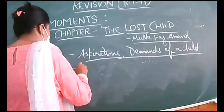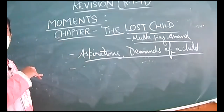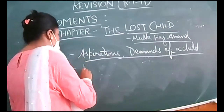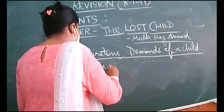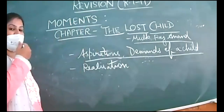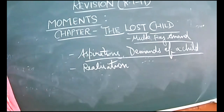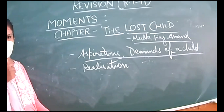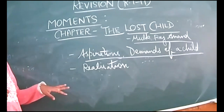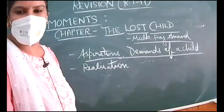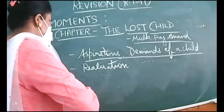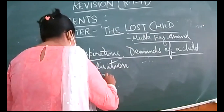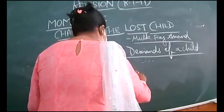In this chapter, there are aspirations and demands, but one more thing is there: realization. Realization that these worldly things do not matter. The lost child in the chapter realizes the importance of parents in one's life. So that is another theme — the importance of parents.